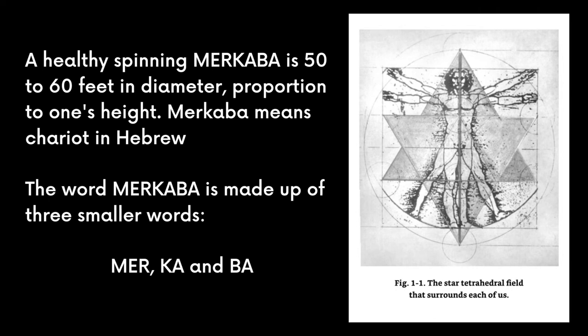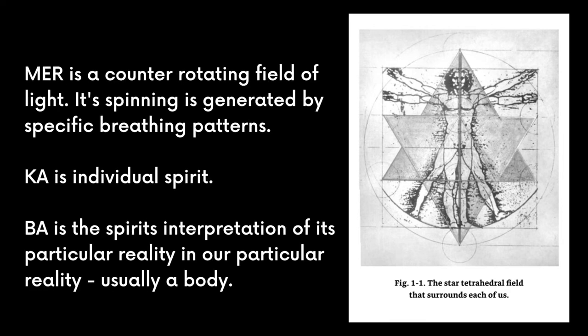A healthy spinning Merkaba is 50 to 60 feet in diameter, proportionate to one's height. The word Merkaba actually means chariot in Hebrew. It's made up of three smaller words: Mer, Ka, and Ba. Merkaba is the counter-rotating field of light — this light field is activated through specific breathing patterns. Ka is our individual spirit, the source of our faith and belief in the work that we are doing. Ba is the spirit's interpretation of this particular reality in our world — usually, we know Ba to be our bodies.